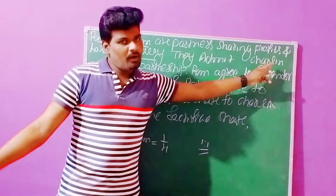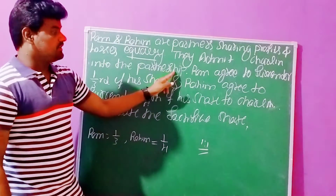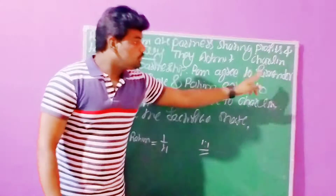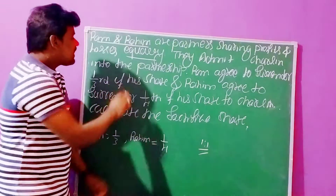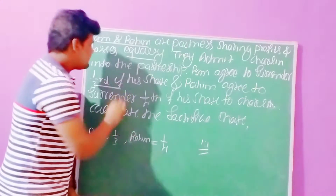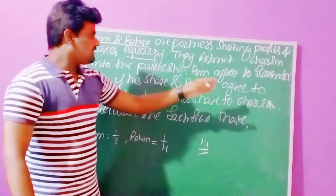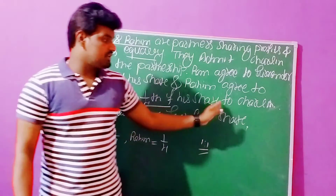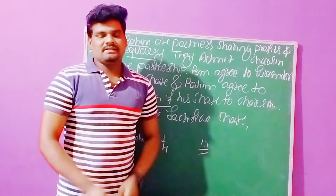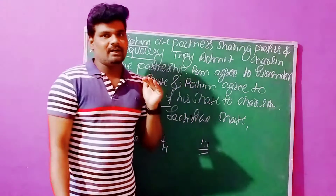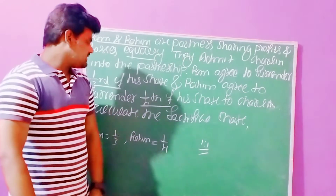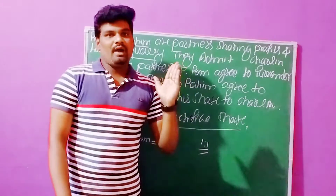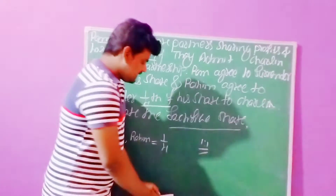They admit Charlin as a new partner into the partnership. On the event of admission of Charlin, Ram agreed to surrender one third of his share to Charlin. Rahim agreed to surrender one fourth of his share to Charlin. Both the partners are sacrificing some part of their profit to the incoming partner. We need to calculate the sacrifice share.